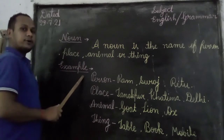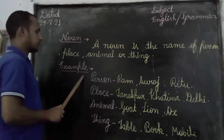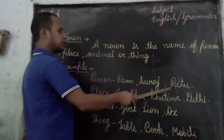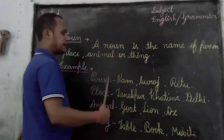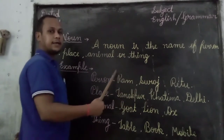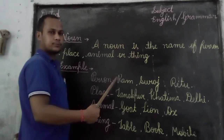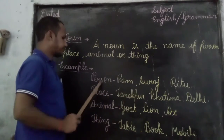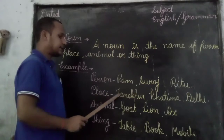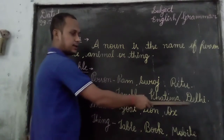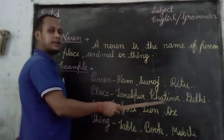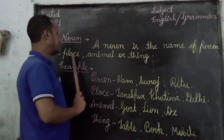Examples of noun. Person: Ram, Sura, Sritu. These are person's names. Places: Danakur, Khatima, Delhi. These are places — name of the place.